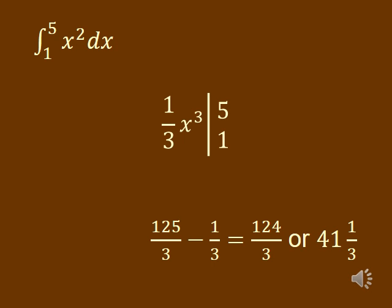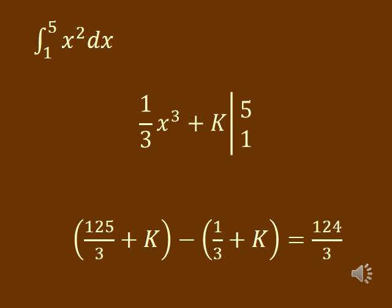When you do the plugging in, it is always the top number first, then you subtract what you get when you plug in the bottom number — so it is 125/3 minus 1/3, not the other way around. If you did put the plus k on your antiderivative, when you plug in you'd get 125/3 plus k and 1/3 plus k. But when you subtract, you'd get k minus k, and they just cancel out. That's why you don't need to worry about putting the plus k in there when you do the antiderivative for definite integrals.